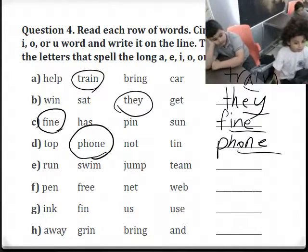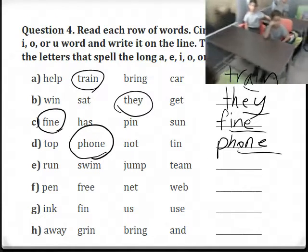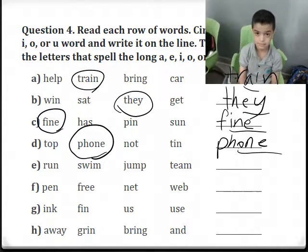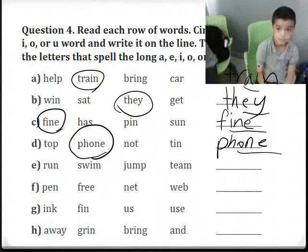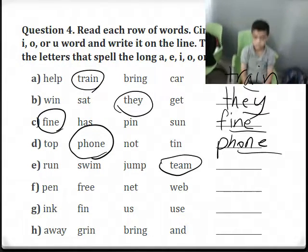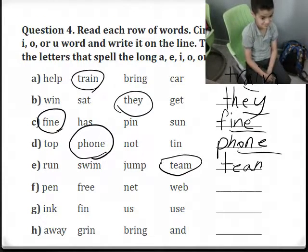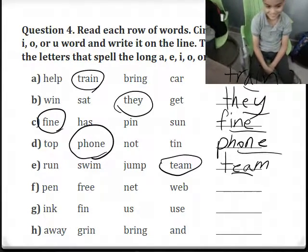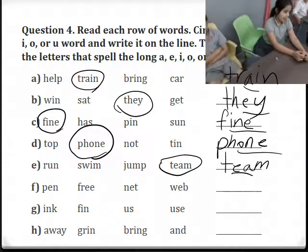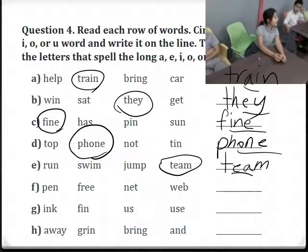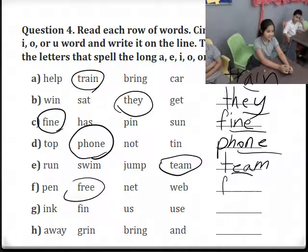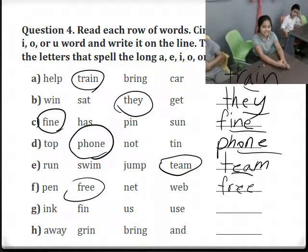Next: run, swim, jump, team. Which word? Team — very good. It has a long E sound. We write it on the line and underline which letters? E and A. Next row: the word is 'free.' What sound does it make? E. Which letters spell the long E sound? E, E — so we underline both E's.